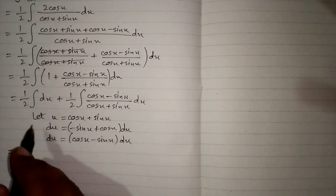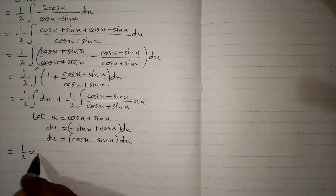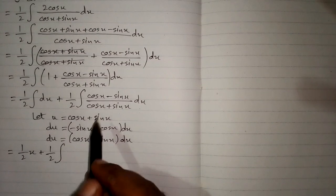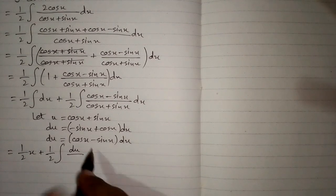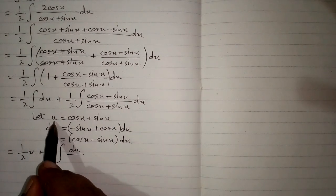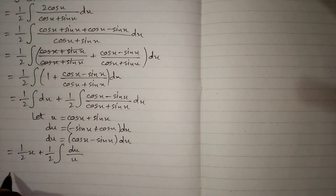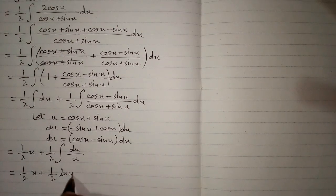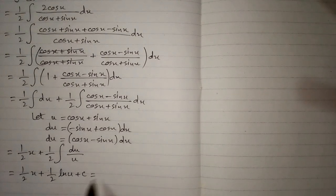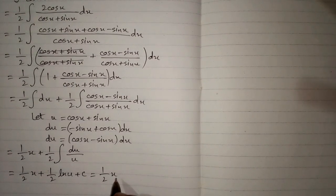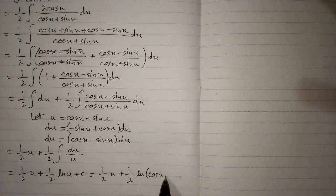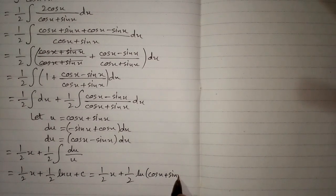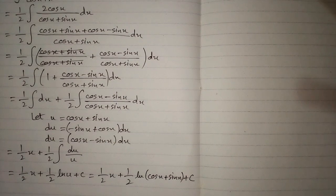The integral of dx is x, so we write half·x plus half of the integral. We can write du in place of cos(x) minus sin(x) dx, and u in place of cos(x) plus sin(x). The integral of du upon u is ln|u| plus c. So the final answer is half·x plus half·ln|cos(x) plus sin(x)| plus c, where c is the constant of integration.